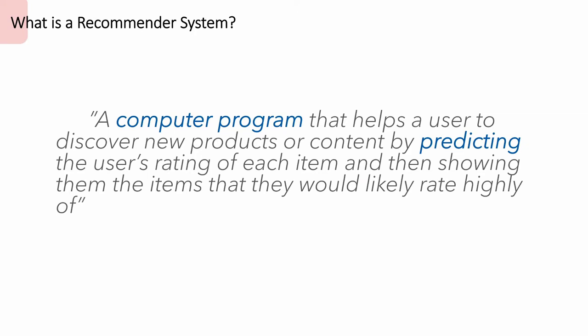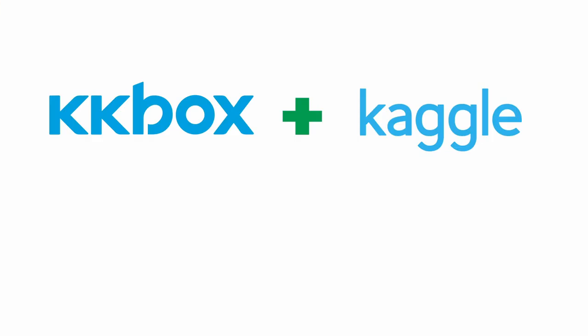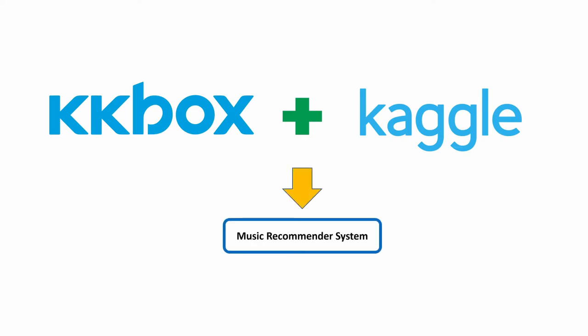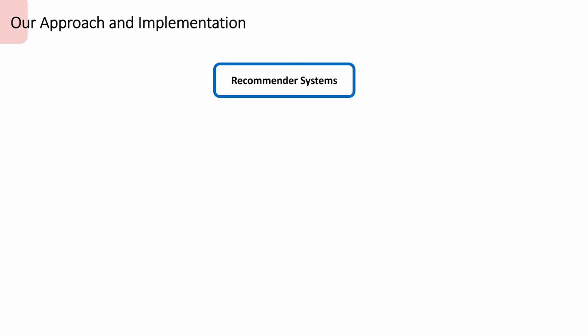So, what exactly is a recommender system? By definition, it is a computer program that helps a user to discover new products or content by predicting the user's rating of each item and then showing them the items that they would likely rate highly of. Using a dataset from Taiwanese music streaming service KKBOX that was shared on Kaggle, our team has implemented a music recommender system to learn more about how it works. A popular way of implementing recommender systems is through a method known as collaborative filtering.